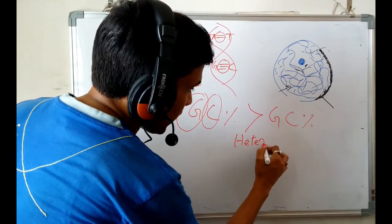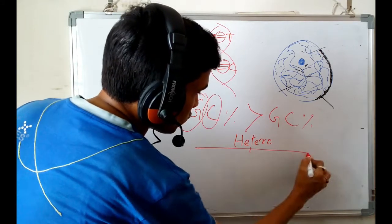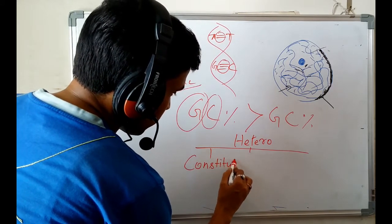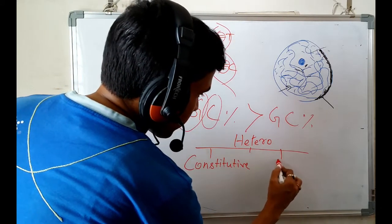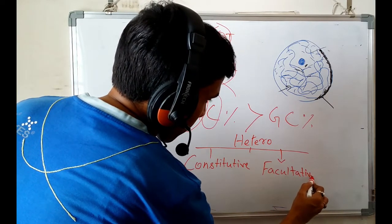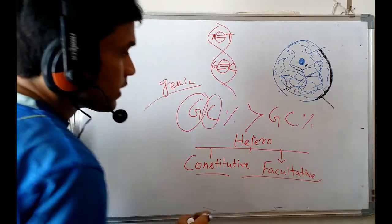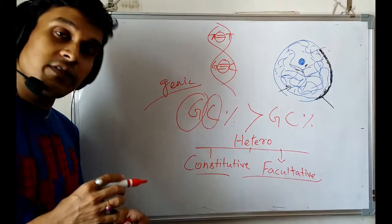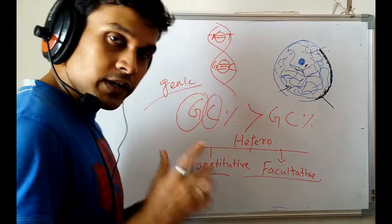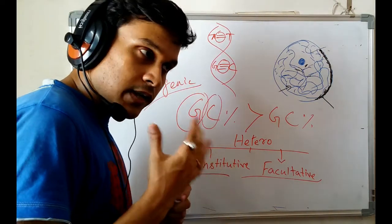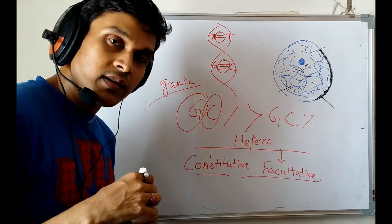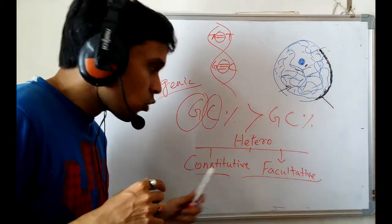Now, heterochromatin itself is also made up of two types: constitutive and facultative. There are differences between constitutive and facultative heterochromatin. If you consider the properties of heterochromatin: first property — it is condensed; second property — it is the non-genic part.